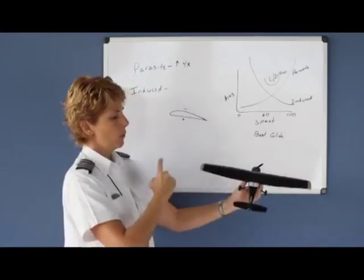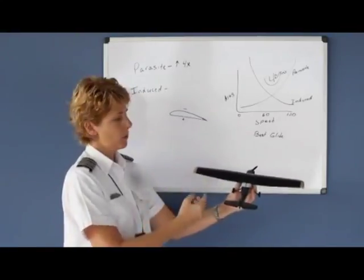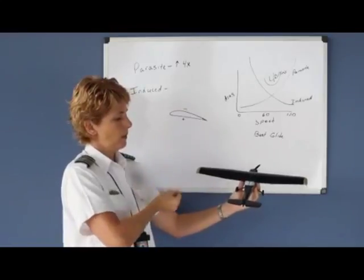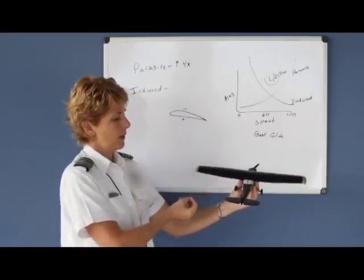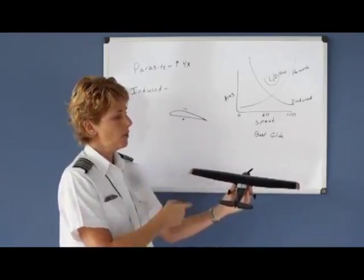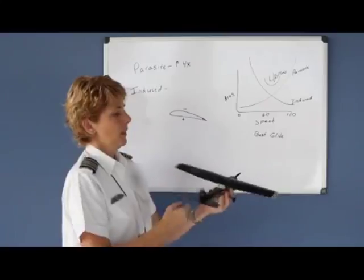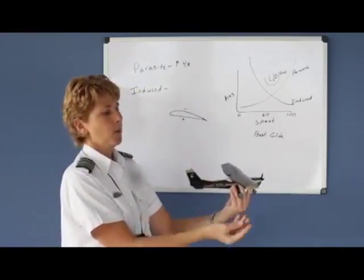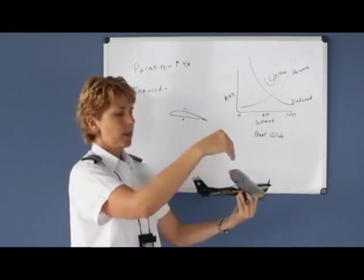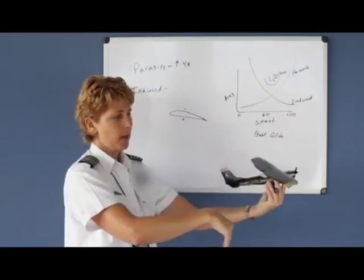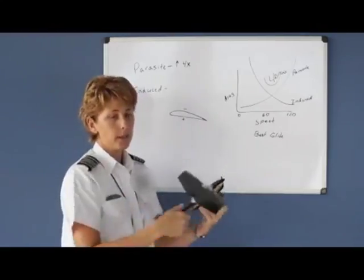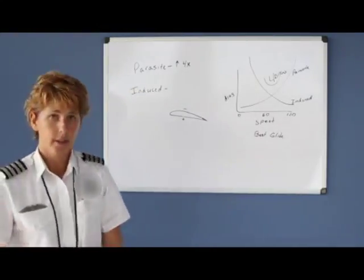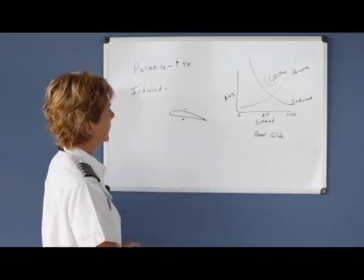Off of both wing tips, we have this circular motion — a down, out, up, and back down again swirling pattern. As the aircraft moves forward through the air, this ends up creating a downdraft behind the wing, and it is this downdraft that creates our induced drag.